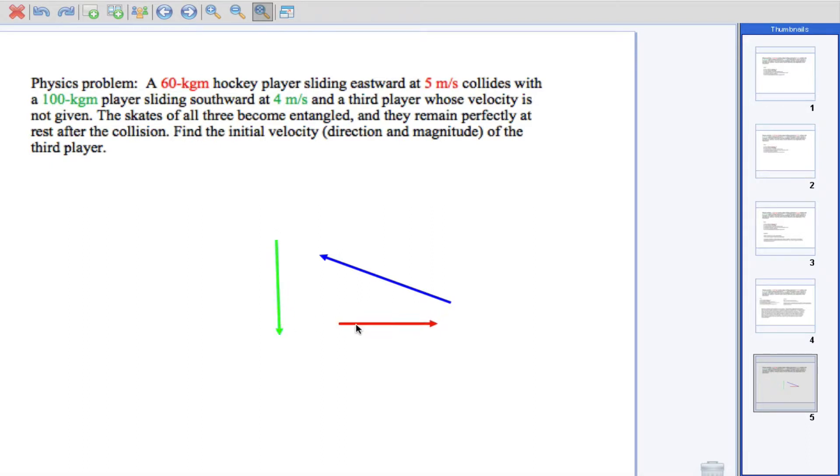So this vector has to equal and be the opposite of these two. So I didn't actually draw it very accurately, because this vector has to look something like that. Now this is not to scale. So if I were to draw, remember this is 400, this side is 300.